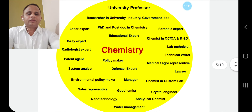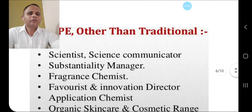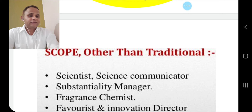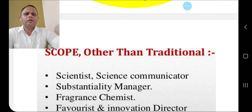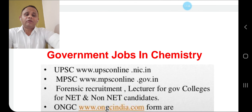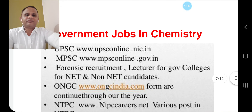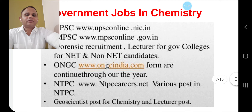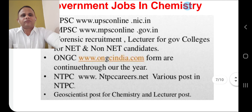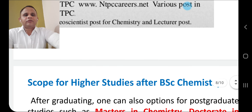Other than traditional careers, you can also work as a scientist, science communicator, sustainability manager, or fragrance chemist. All other branches are open for chemistry graduates. You can also apply for government jobs — UPSC exam, MPSC, forensic laboratories, lecturer posts for government colleges. You can join government sector organizations such as ONGC, IPCL, IOCL — petrochemical industries. You can also work as a geochemist or chemistry lecturer. These are the chemistry scopes.